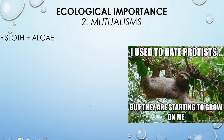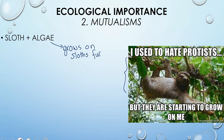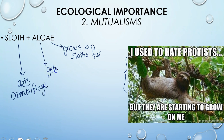Our next mutualism is our sloth with algae. The algae is growing on the sloth's fur. We all know that sloths are slow, and sloths typically live in the canopy of trees. A slow sloth is not going to be much competition for a fast jaguar. What the sloth gets out of this relationship is camouflage from the green algae, whereas the algae, which is photosynthetic, gets transportation up to the sunlight so that it can photosynthesize more.